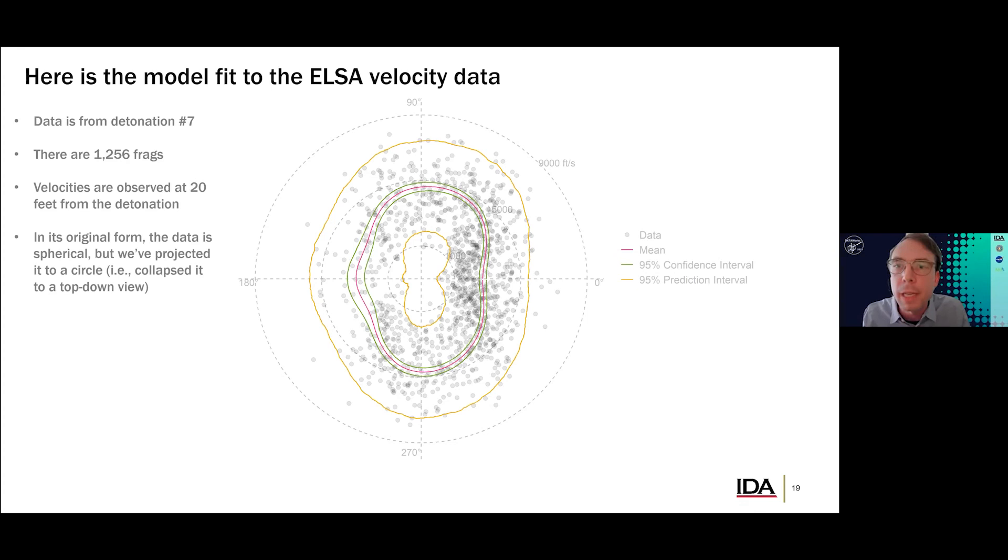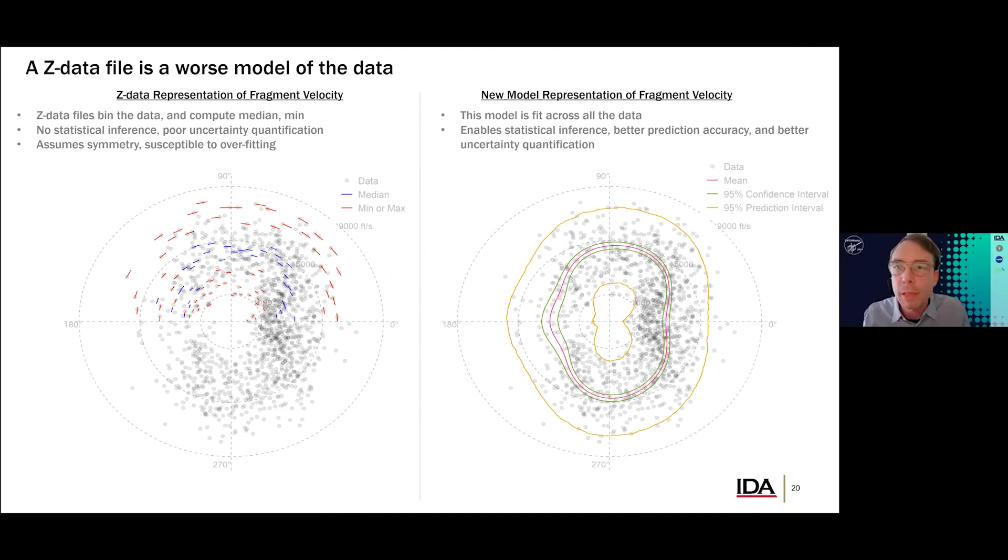And this is the result of the spatial convolution model fit to these 2D data. It's a smooth circular model fit, and it summarizes the velocity distribution at any radial point around the warhead. The model reflects what we see in the data, which bolsters the model's believability. As before, the pink line represents the posterior mean of the data. It is highest in the beam spray, but there is a depression in the nose at 0 degrees, and there's a peak in the tail at 180 degrees. And you'll notice now that the green confidence intervals are very skinny. And that's because as we gather more fragments, we gain more certainty about where the mean velocity is as a function of wrapping around the warhead.